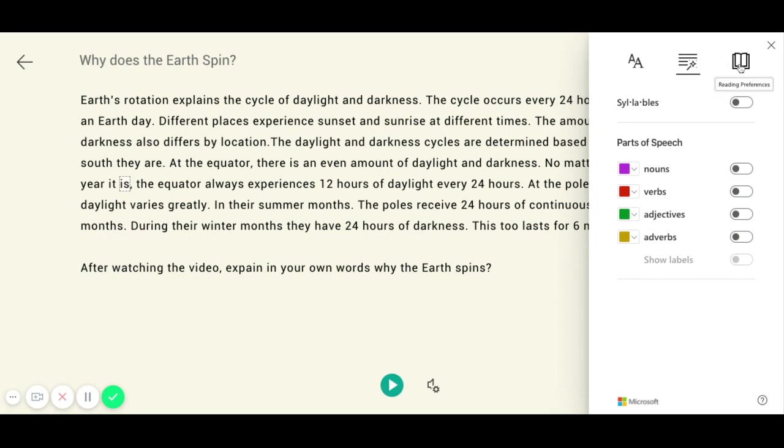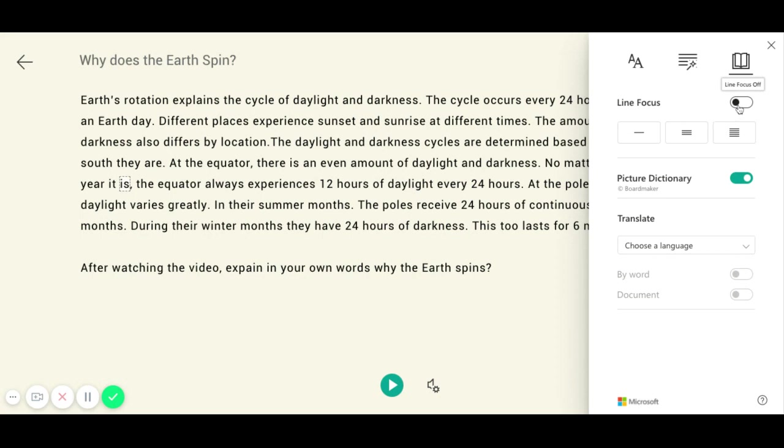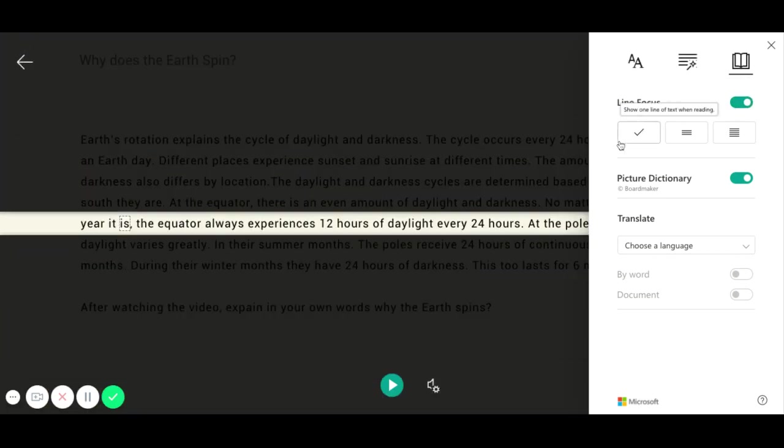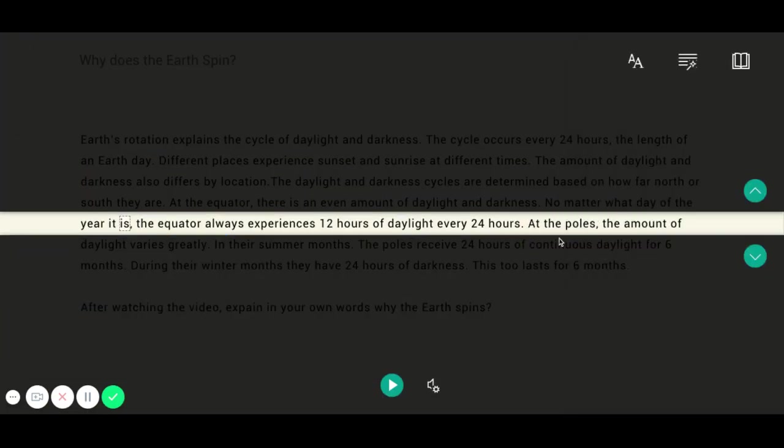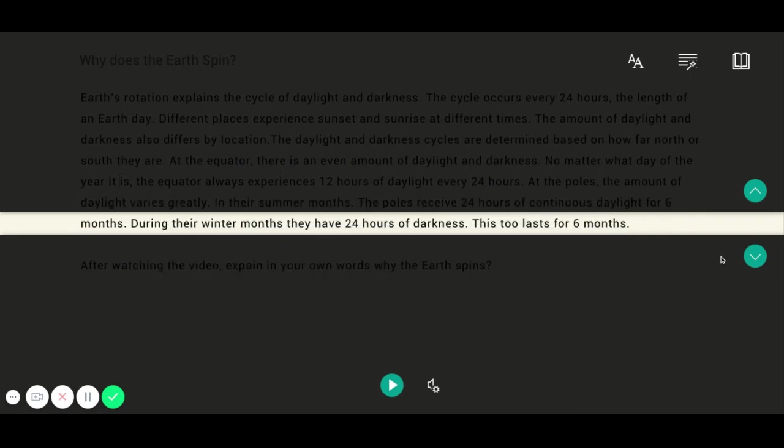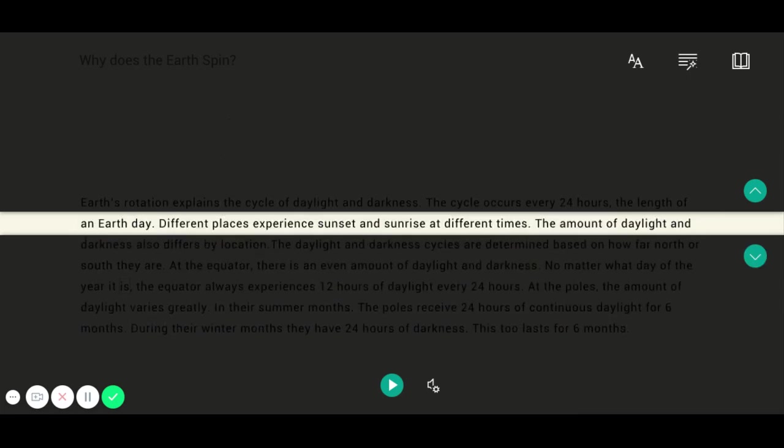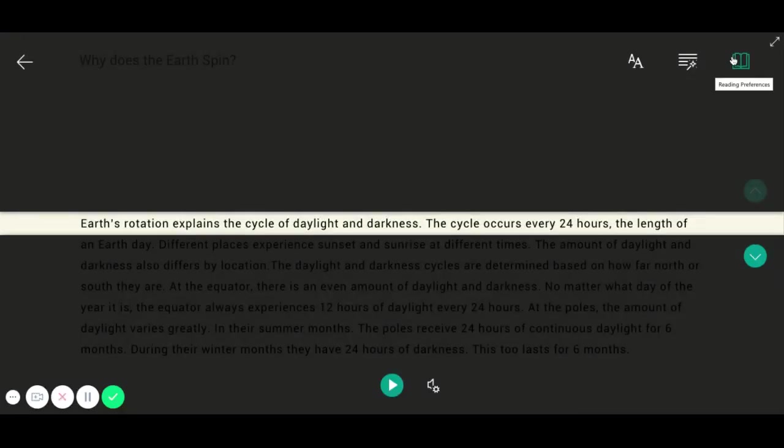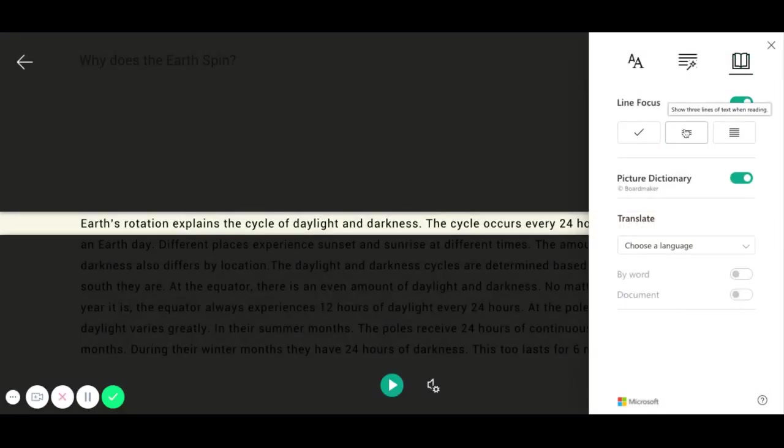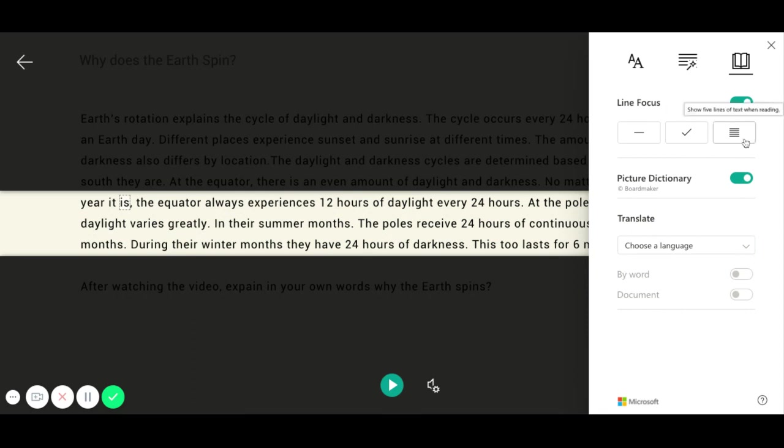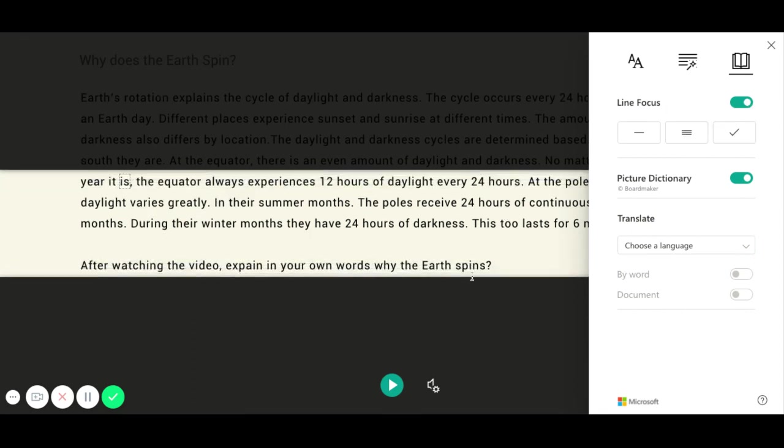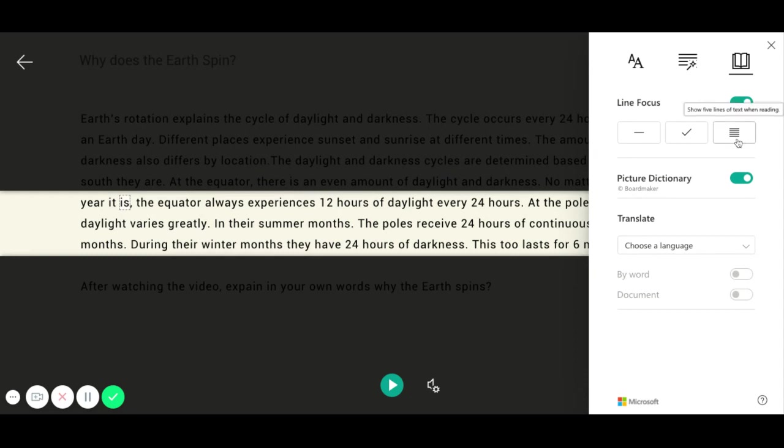The final option is reading preferences. First is line focus, which I can set to one line at a time. This can really help in a digital world if you're not used to reading on a computer or iPad. I can change the line focus to three or five lines. Your options are one, three, or five.